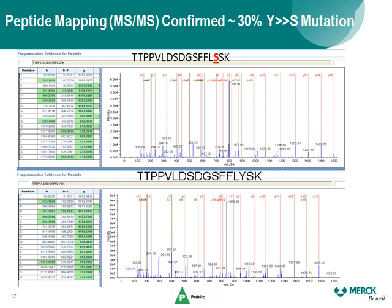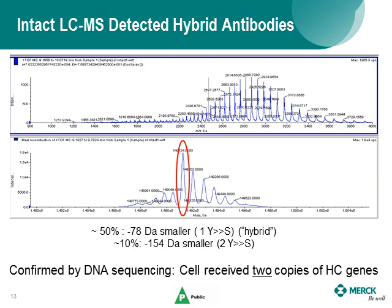MS/MS confirmed the mutation is threonine-to-serine in this peptide. However, from this data alone we were still not sure whether each molecule has one mutation or two mutations on its two heavy chains. To solve this, we examined the intact LC-MS data. The intact LC-MS analysis showed that about 50% of the molecules have only one heavy chain carrying the mutation while the other heavy chain is normal, and about 10% of the molecules have both heavy chains mutated. This was further confirmed by gene sequencing, showing the cell received two copies of the heavy chain gene and made a hybrid molecule.